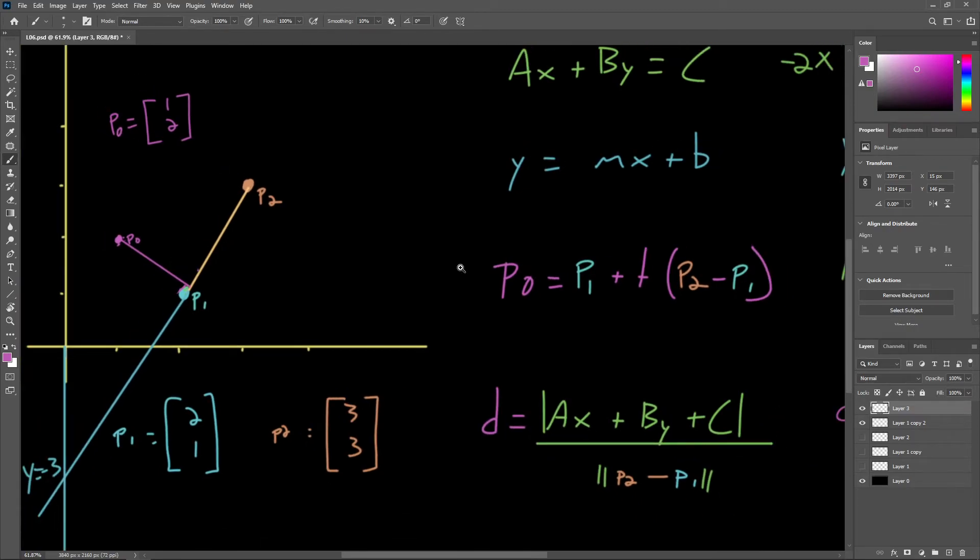And this distance calculation is very useful on its own as it could be used, for example, in a game perhaps to determine how far off a predetermined path an NPC is and to use that to determine some sort of AI behavior. So we'll definitely be keeping this equation in mind as we move forward and discuss plane equations.